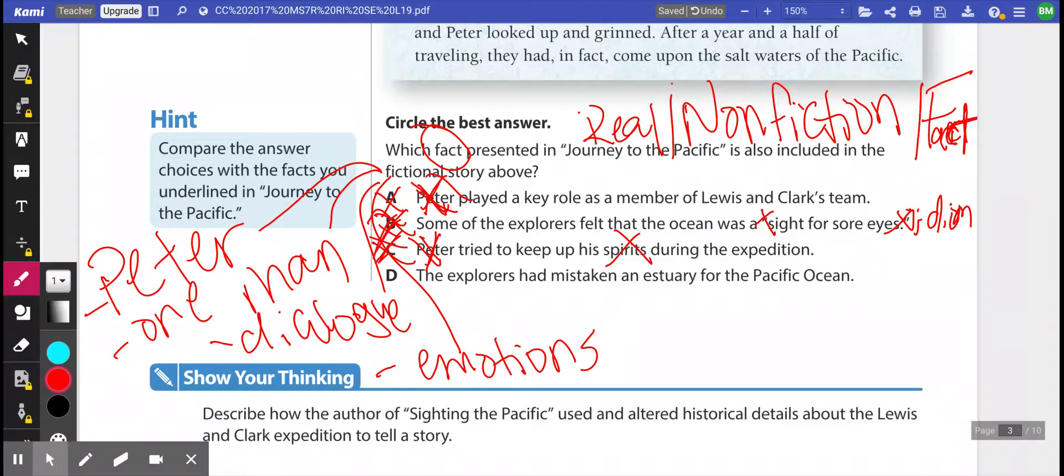And D says the explorers had mistaken an estuary for the Pacific Ocean. Well, that happened. We underlined that earlier in our text because it was in both accounts. One was in the historical account and one is in this one. So yes, D is your answer.